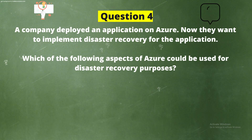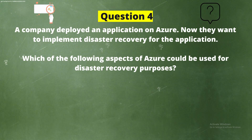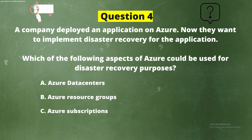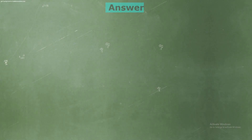Question 4: A company deployed an application on Azure. Now they want to implement disaster recovery for the application. Which of the following aspects of Azure could be used for disaster recovery purposes? Options: Option A - Azure Data Centers, Option B - Azure Resource Groups, Option C - Azure Subscriptions, Option D - Azure Regions.